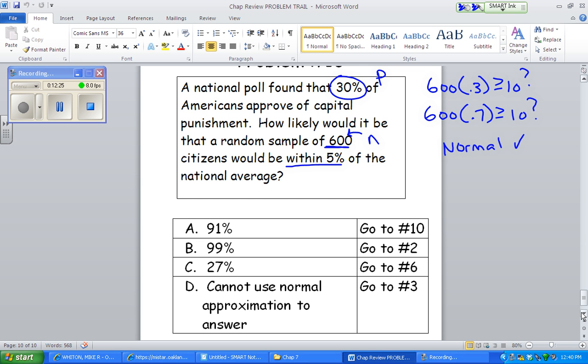Okay, so let's think about this picture now. We know the center of its 0.3. Okay, again, the center is always whatever the population's value is.